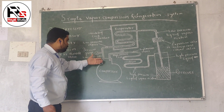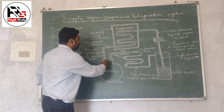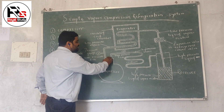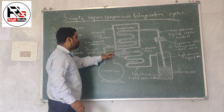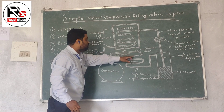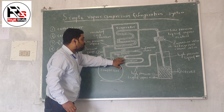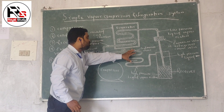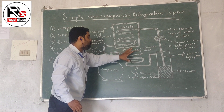When the compressor compresses the refrigerant, the temperature and pressure automatically increase. Then it will discharge to the condenser. When it discharges to the condenser, only the high pressure refrigerant comes to the condenser.